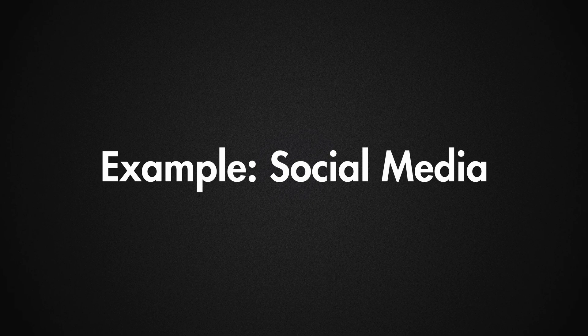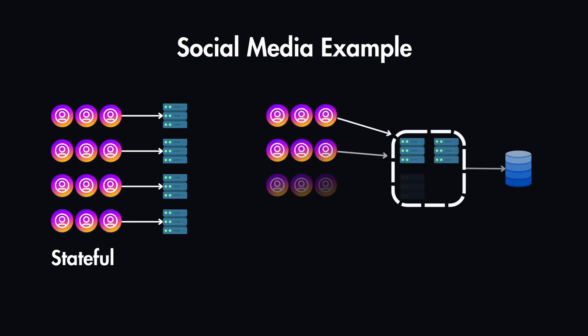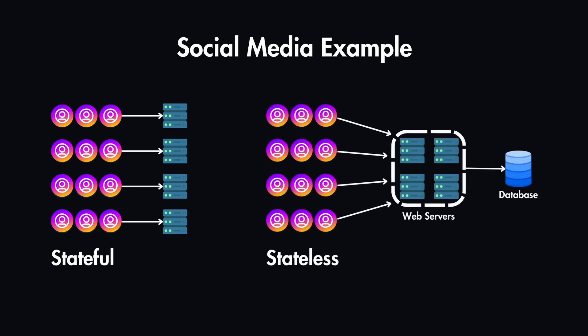And if you think about any large platform like social media apps — if Facebook or Instagram were built on a stateful system, you'd need to connect to the same server every time you refresh your feed or check your messages, and obviously that wouldn't work well with millions of users. But in a stateless system, any of these servers can handle your request because all of your data like your messages, photos, or posts are stored in a shared database. And this is what makes stateless systems much better for big apps that need to scale and handle lots of users at the same time.